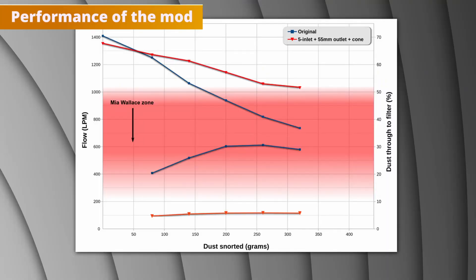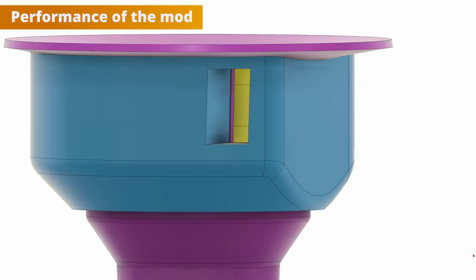Compared to the original vacuum, my mod reduced the starting flow by only 4% which is pretty good considering we only have 76% of the original inlet area. This shows how much you can gain by having smooth edges.